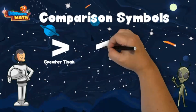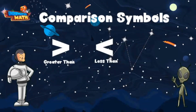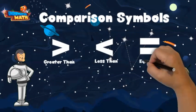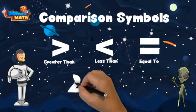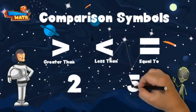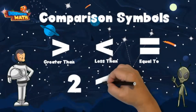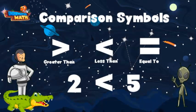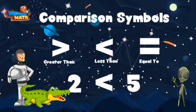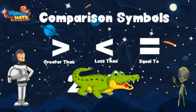We have greater than, less than, and equal to. The comparison symbol always wants to open up to the larger number. For example, if we compare the numbers two and five, we would use the less than symbol because it opens up to the five. I've always thought of it like an alligator — the alligator always wants to eat the bigger number.